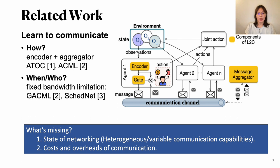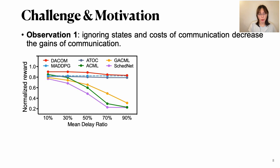So what's missing here? First, the state of networking is ignored, which only considers network limitation as fixed and static. However, given our analysis before, the capacity is heterogeneous among agents and varies over time. Secondly, the cost and overheads of communication, especially the delays, have been ignored. So until now, we don't know how delays will impact cooperation.